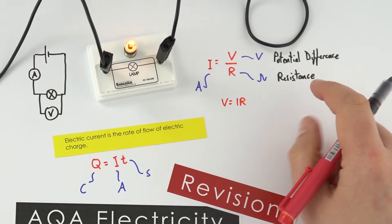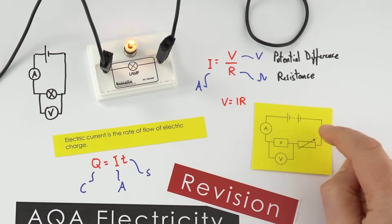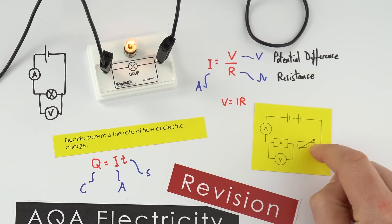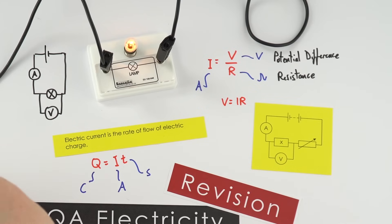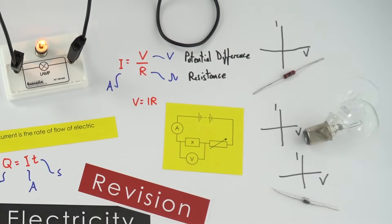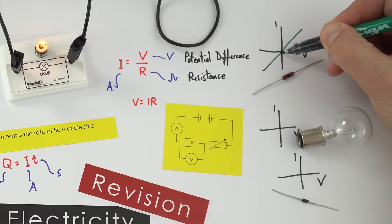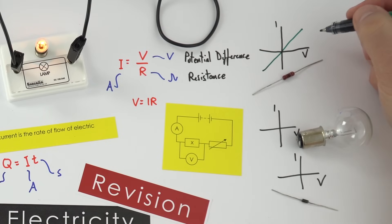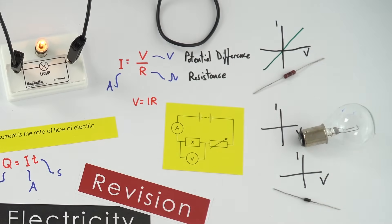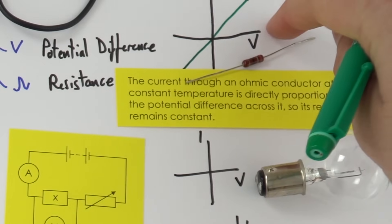When it comes to resistance we can set up a simple circuit with a power supply and a variable resistor, which allows us to change the current and potential difference across a component. We can investigate the characteristics of resistors, lamps, and diodes. For a resistor, when we plot values of current and potential difference we get a straight line through the origin, meaning the resistance is constant. This is an ohmic conductor — provided it stays at the same temperature, the current is proportional to the potential difference.